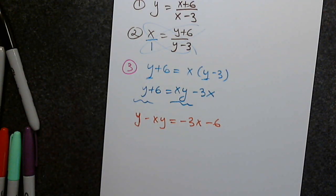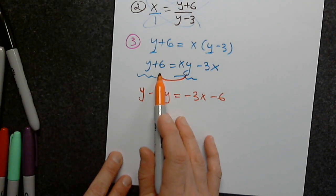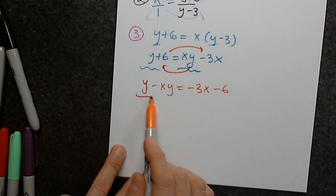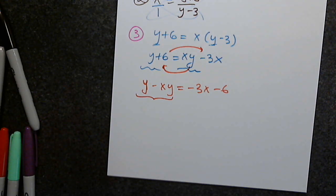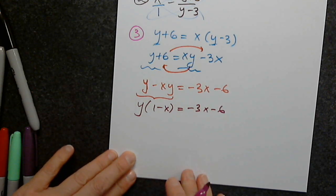Everyone on track? Then I distribute and move terms to each side. Now I cannot combine them — remember the key words always: factor, simplify, descending order, no negative leading coefficient. So I factor out y: y(1 - x) = -3x - 6.